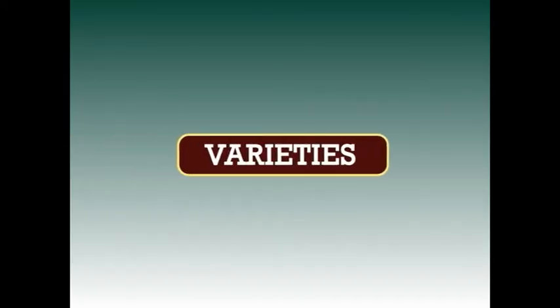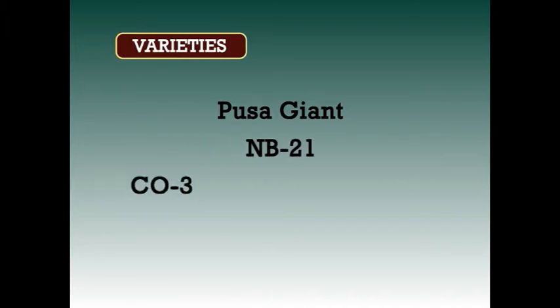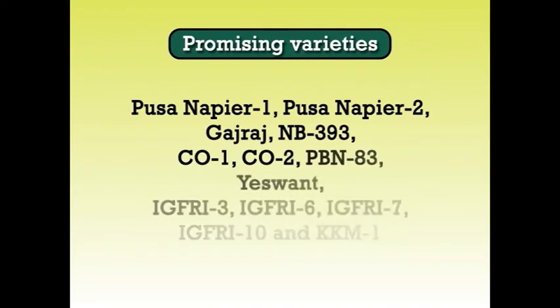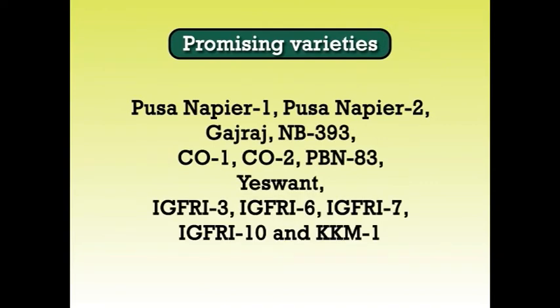The popular varieties include Pusa Giant, NB21, CO3, and CO4. Besides these four commonly-grown varieties, there are some other promising varieties like Pusa Napier 1, Pusa Napier 2, Gajraj, NB393, CO1, CO2, BBNA3, S1, IZFRI3, IZFRI6, IZFRI7, IZFRI10, and KKM1.